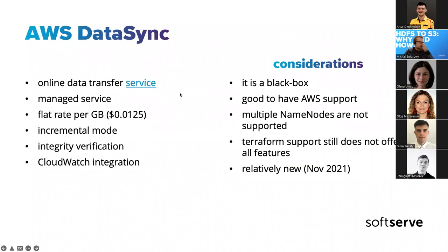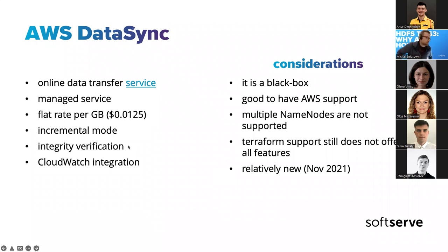There is AWS DataSync. The nice thing about it is it's a managed service — there's nothing to manage in some scenarios. It's flat rate per gigabyte, so that's the price of the transfer. You don't pay for anything else beyond the data you copy with DataSync, plus CloudWatch if you use it. It has an incremental mode and integrity verification — it's the only tool that actually checks the checksums of the transferred files. RClone's HDFS provider doesn't do this, and distributed copy also does not do this.